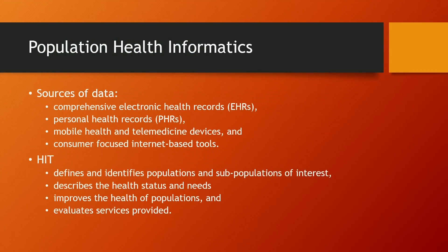Population health informatics — remember, we're talking about a group of people based on some type of characteristics. We get data for population health informatics from our EHRs, PHRs, devices, consumer-focused internet-based tools, or what we might term patient portals. Our health information technology will define and identify our populations and subpopulations of interest. It can be everyone we're taking care of — UT Physicians, Memorial Hermann, or other integrated healthcare delivery systems. Within that, we may have subpopulations: we may want to track our diabetics for something and our heart disease patients for something else.